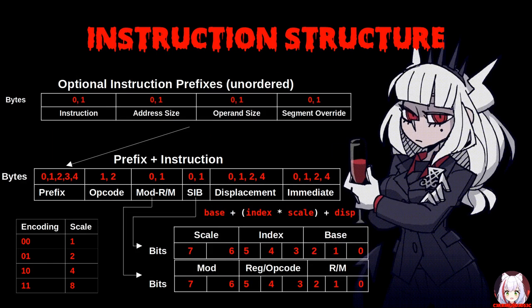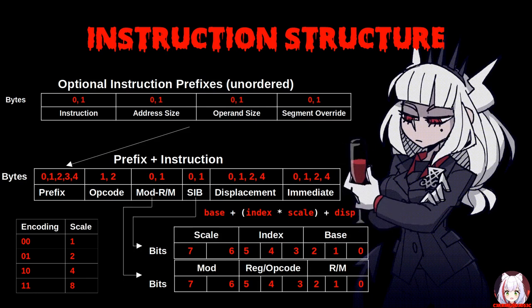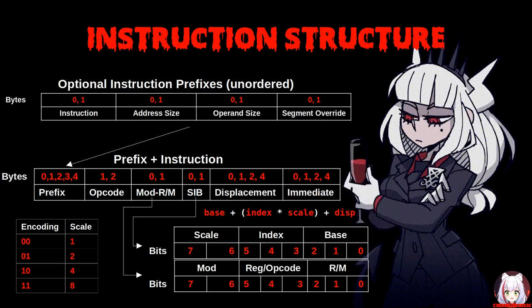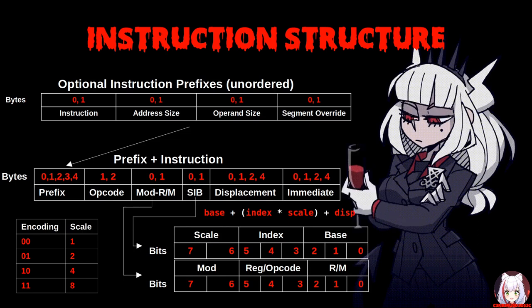Now that we have covered basic components of an instruction, let's look at how these different components appear together. An x86-64 instruction may be at most 15 bytes in length. It consists of the following components in order, where prefixes are at the lowest address in memory. ModRM is 1 byte if required. SIB is 1 byte if required. Displacement is 1, 2, 4, or 8 bytes if required. And immediates are 1, 2, 4, or 8 bytes if required.